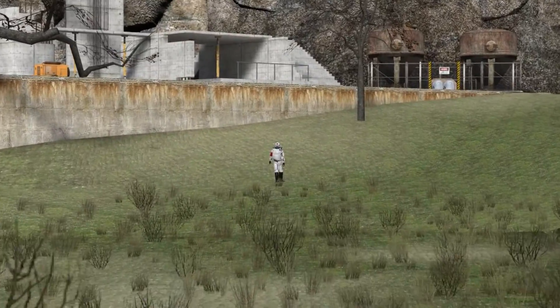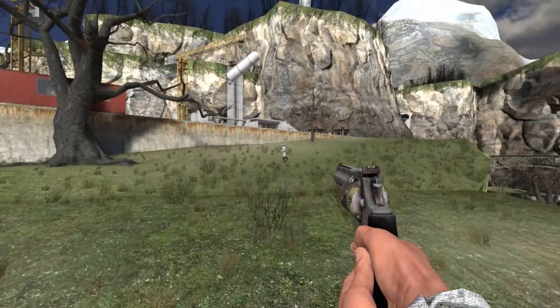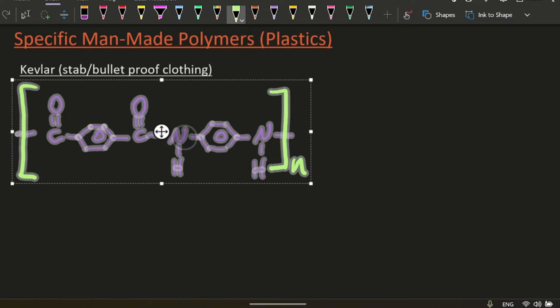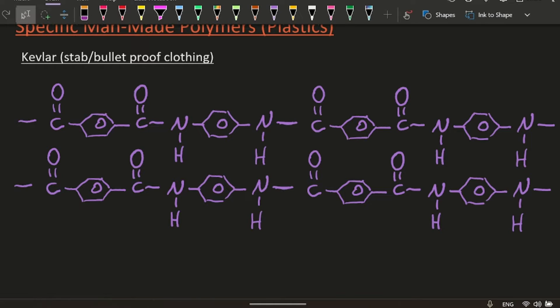Three specific ones. Let's look at Kevlar, that's in stab proof or bulletproof clothing. There's the monomer of Kevlar. So there are two sections of the polymer Kevlar put close together. Let's look at the intermolecular forces between these two chains. You can see there's hydrogen bonding here and here. Hydrogen bonding is the strongest intermolecular force, and so that's going to give Kevlar a lot of its strength. Recall that this is not a hydrogen bond.